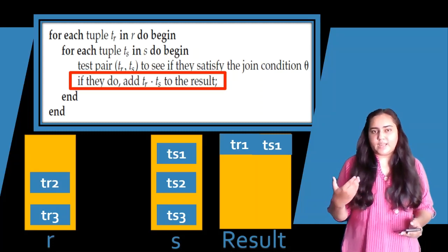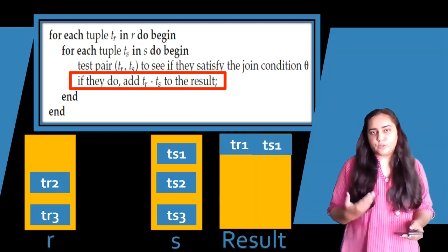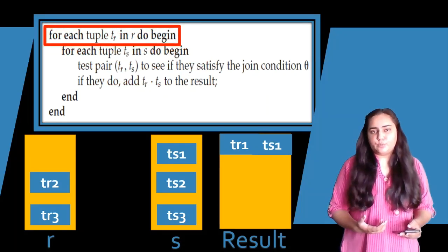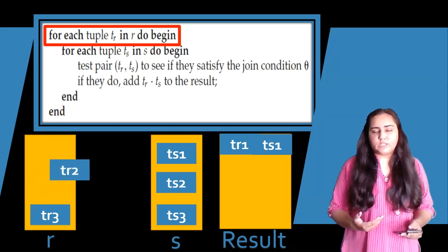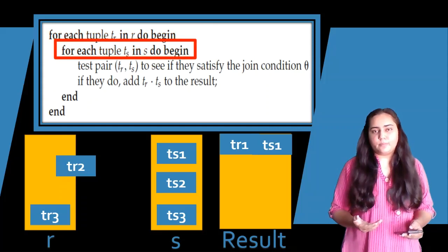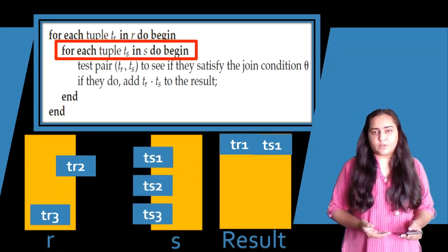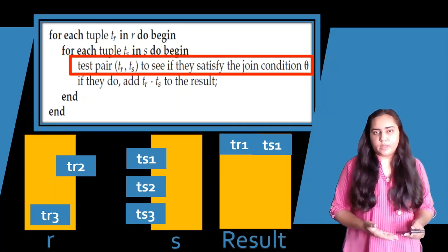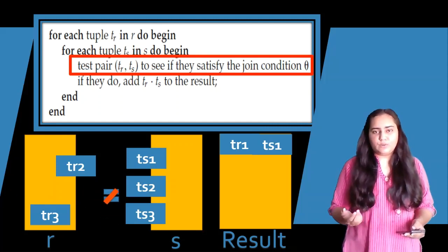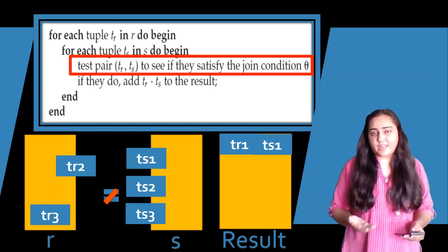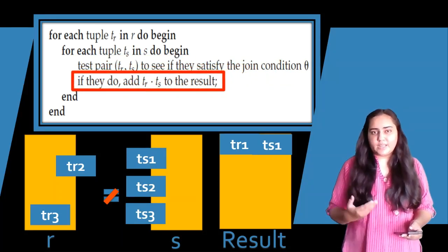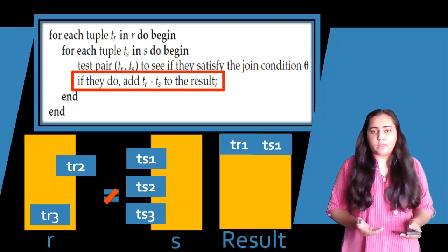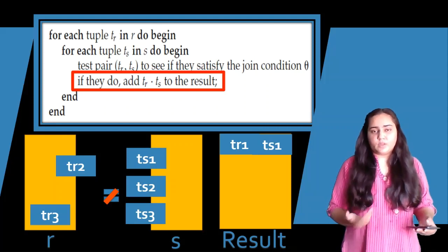At this point the algorithm goes back to the first for-each loop and picks the next tuple from R, which is TR2. It then picks all tuples from S one by one and compares them with TR2 using the same equal-to condition. Suppose TR2 does not match any of the tuples of S — in that case we do not add anything into the resulting table.